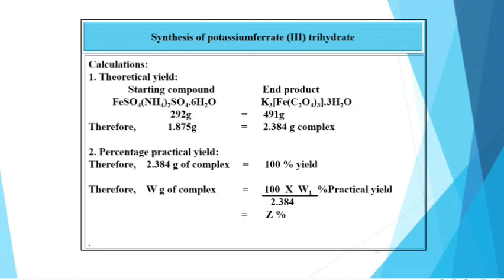So, this is the final product. Calculations: To calculate theoretical yield, starting compound is ferrous ammonium sulfate and end product is potassium ferrate trihydrate. So, 292 g of FAS corresponds to 491 g of potassium ferrate trihydrate. Therefore, 1.875 g corresponds to 2.384 g of complex.